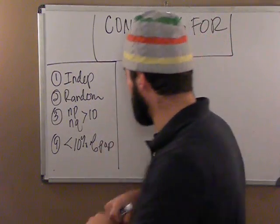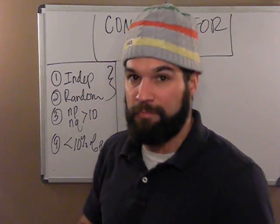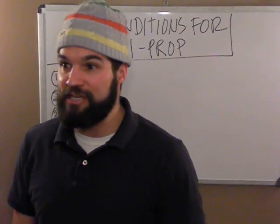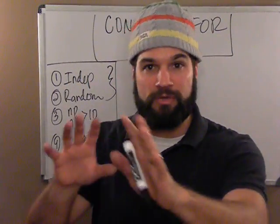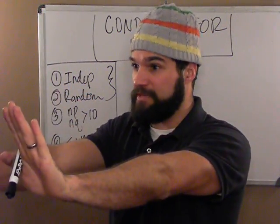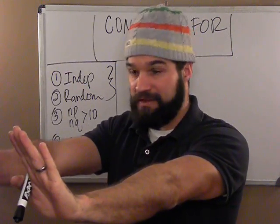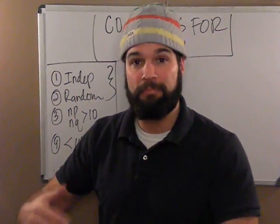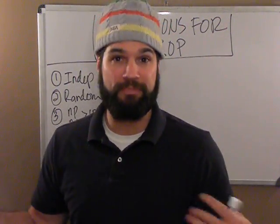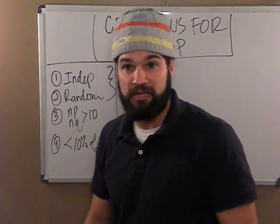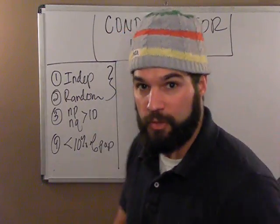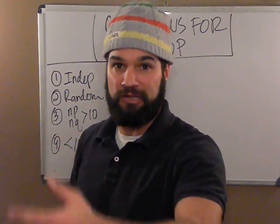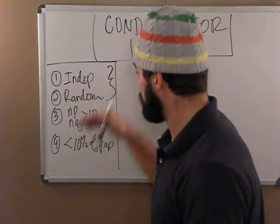Let's talk about the three conditions: independent and random. This comes about because proportions are based on Bernoulli trials. We want to make sure observations are independent from each other. For example, we don't want someone saying 'I like cheese' and the next person being influenced by that. Each person must be independent, and because these are Bernoulli trials, the probability of success — say, liking cheese — must remain the same for every person. Randomness helps guarantee that.